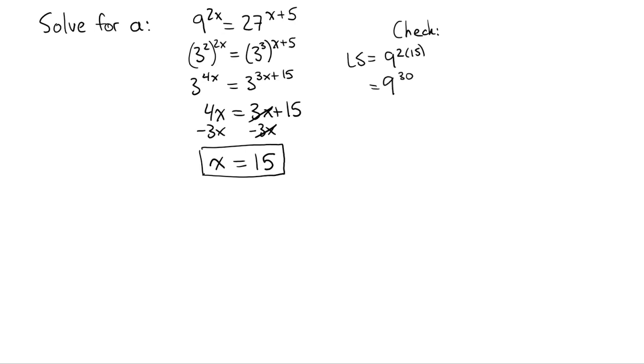And then we could take that one step further, actually. Rather than type it in our calculator, we could actually write this as 3 squared to the power of 30. Well, that would be 3 to the power of 60. So let's see if we get 3 to the power of 60 on the other side with our check.